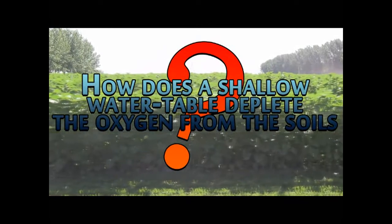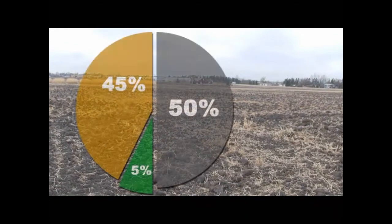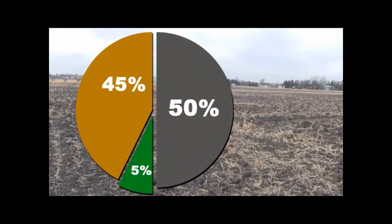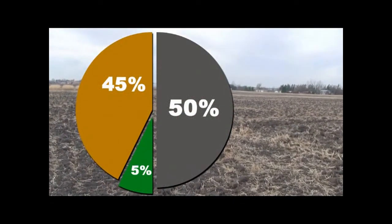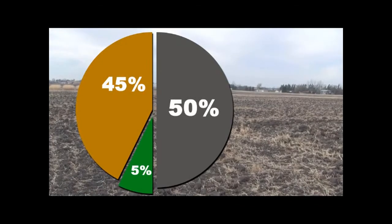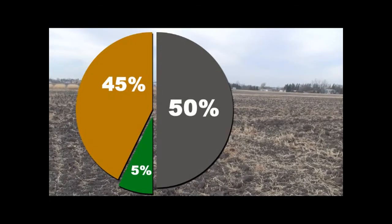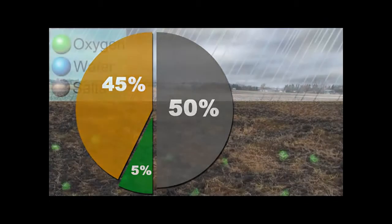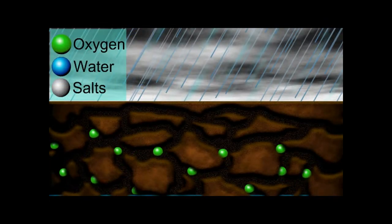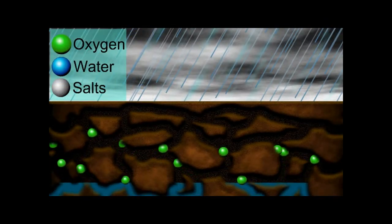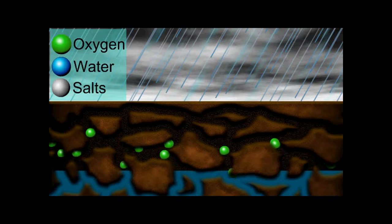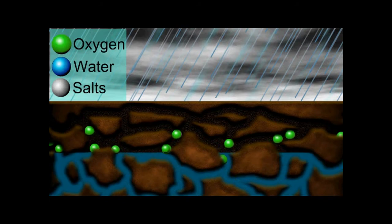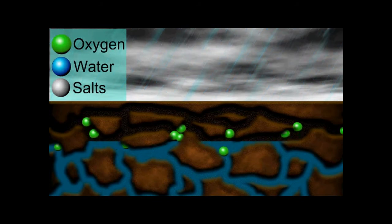How does a shallow water table deplete the oxygen from the soil? A typical medium-textured soil will be made up of 45% mineral component including sand, silt and clay, 5% organic matter that includes the plant residues, animals and microorganisms, and 50% spaces occupied by pores around the soil particles. As the water table depth rises close to the surface, nearly all of the soil pores will be occupied by soil water, which will lead to the depletion of oxygen within the plant root zone.